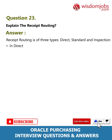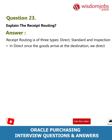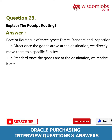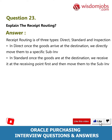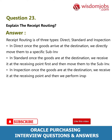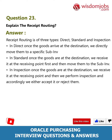Question 23: Explain receipt routing. Answer: Receipt routing is of three types — direct, standard, and inspection. In direct routing, once goods arrive at the destination we directly move them to a specific supply location. In standard routing, once goods are at the destination we receive them at the receiving point, then perform inspection, and accordingly either accept or reject them.